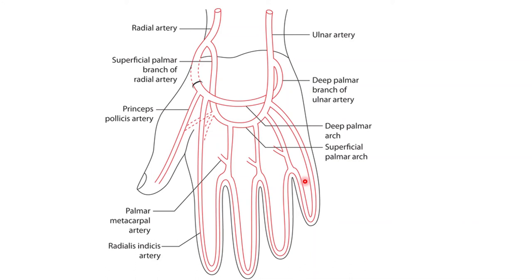To summarize: the location of the superficial palmar arch is distal to the flexor retinaculum and deep to the palmar aponeurosis. Regarding the formation, it is contributed by the superficial branch of the ulnar artery and the superficial branch of the radial artery, with the arch mainly contributed by the ulnar artery. The branches include four palmar digital branches which give common palmar digital branches supplying the fingers. The superficial palmar arch supplies the medial three and a half fingers of the palm.